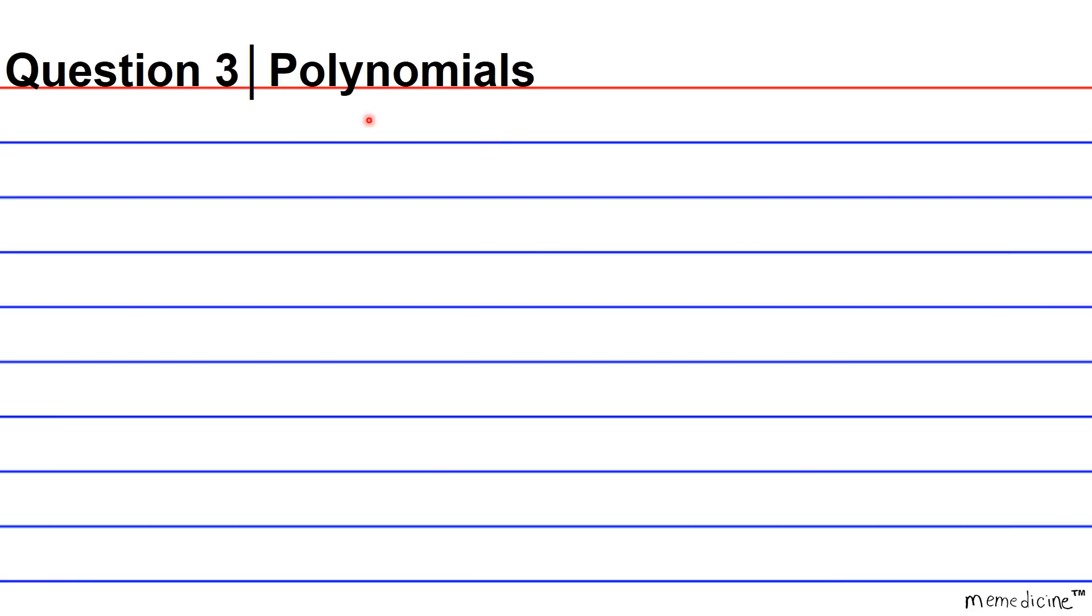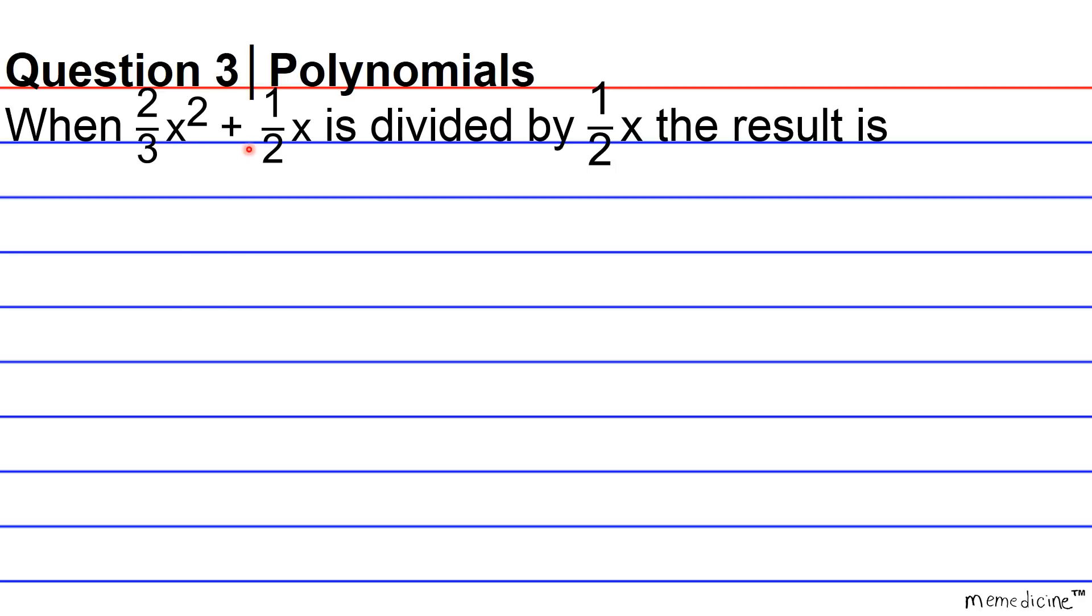Question 3: When 2 thirds x squared plus 1 half x is divided by 1 half x, the result is: